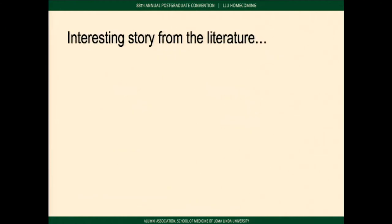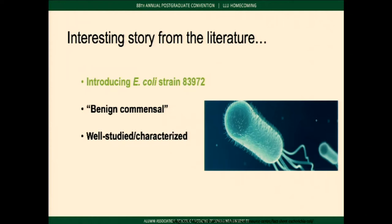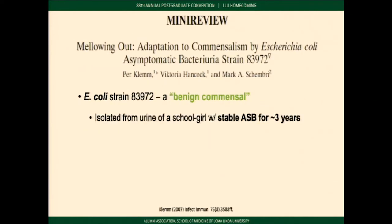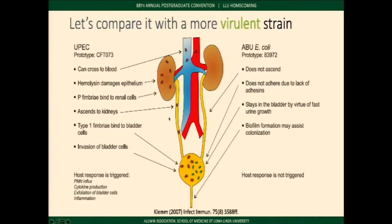I'd like to shift to an interesting story from the literature. I'm going to introduce you to a bacteria called E. coli strain 83972 — that's an artist's rendition, not an actual photograph. It's a benign commensal, well studied and characterized for years. It was originally isolated, I believe in the 70s, from a schoolgirl with stable asymptomatic bacteriuria for several years. The strain had lost all its virulence factors and gained the ability to persist in the bladder. It optimized the ability to grow quickly and form biofilms — efficient colonies that are really hard to get rid of.